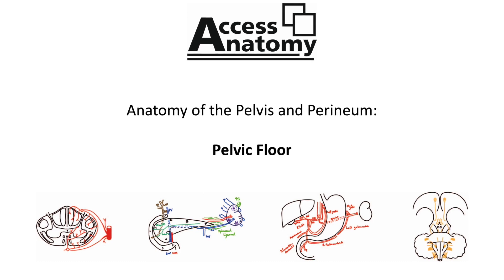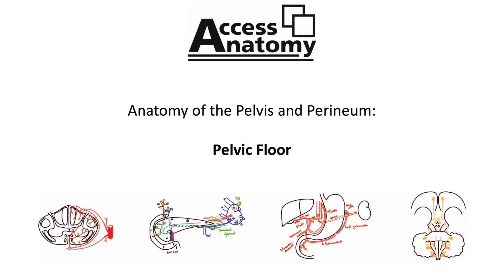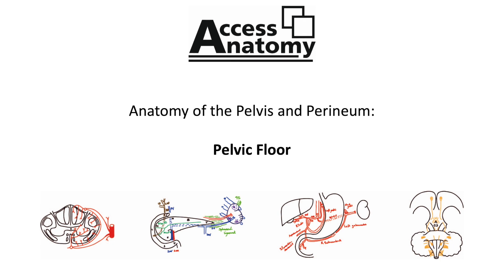So now let's turn to the pelvic floor. The pelvic floor can also be known as the pelvic diaphragm, and this is made up of a thin sheet of muscles which are bounded above and below by pelvic fascia. This pelvic diaphragm separates the pelvis superiorly from the perineum inferiorly. The pelvic diaphragm, or pelvic floor, consists of a thin sheet of muscle made up from coccygeus and levator ani.